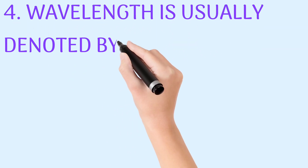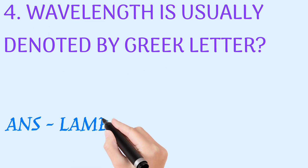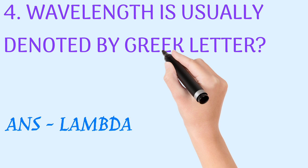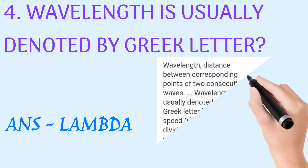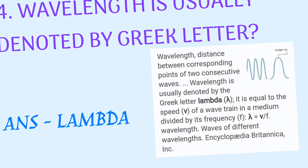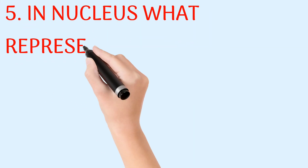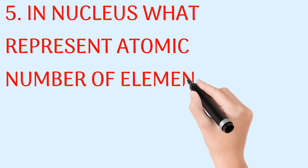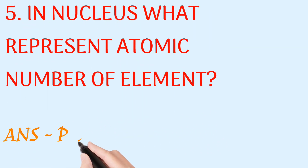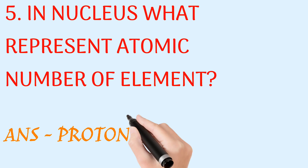Wavelength is usually denoted by the Greek letter — answer: lambda. In the nucleus, what represents the atomic number of an element? Answer: proton.